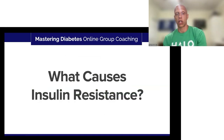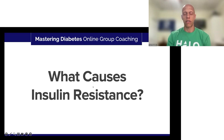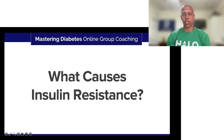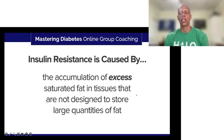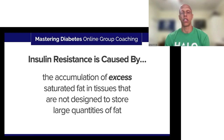So here's the question: what causes insulin resistance? A lot of you answered that it's either fat or sugar, or some combination thereof. The answer is that insulin resistance is caused by the accumulation of excess saturated fat in tissues that are not designed to store large quantities of fat.